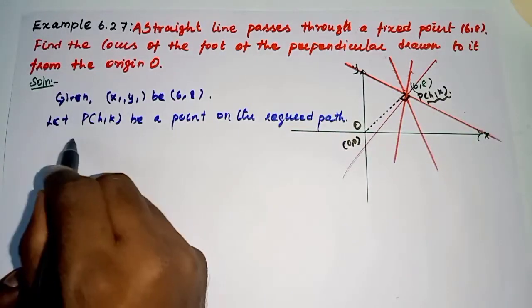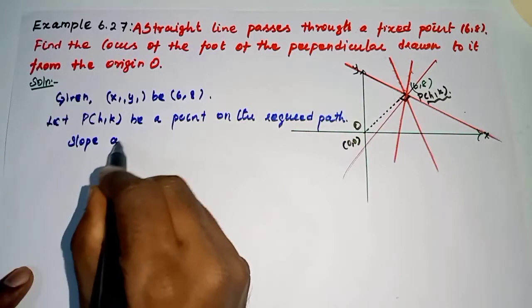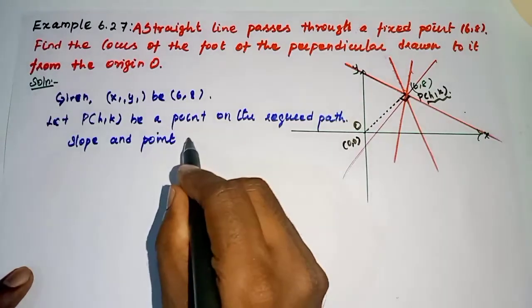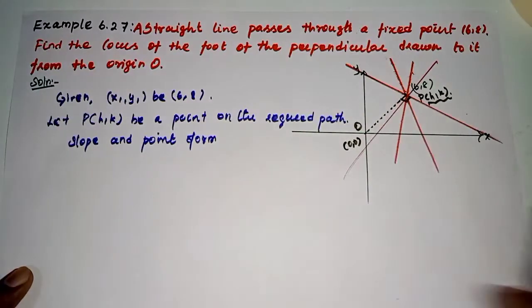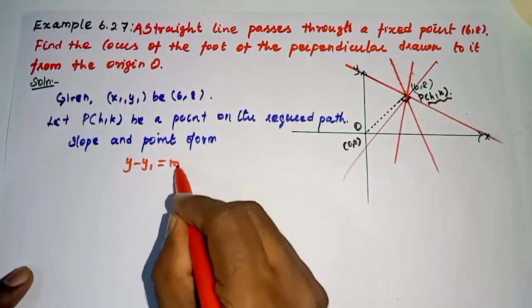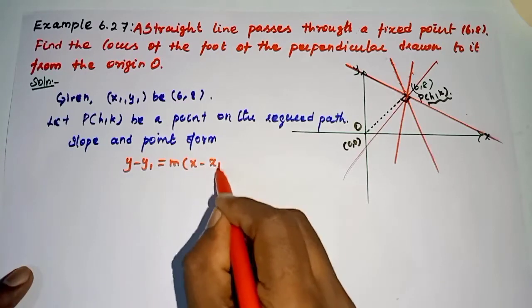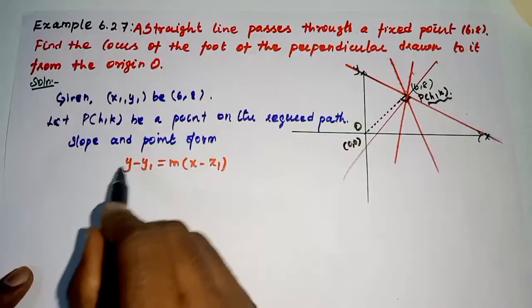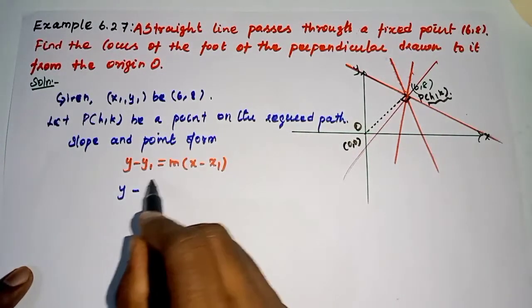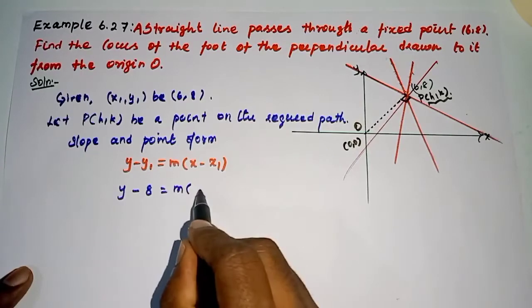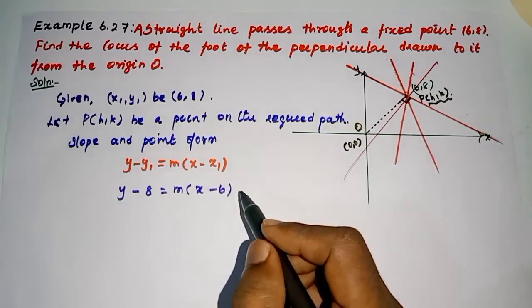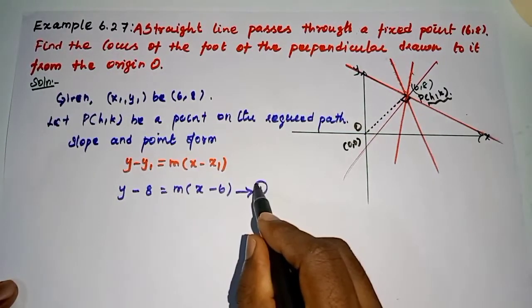Okay, so we know the slope and point form: y - y₁ = m(x - x₁). Okay, so here the point y₁ is 8, so y - 8 = m(x - 6). Let us assume this is equation 1.